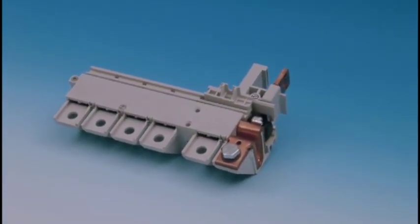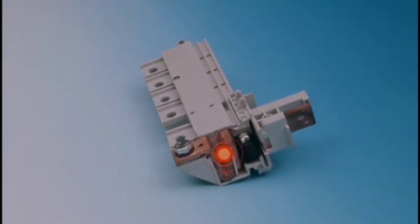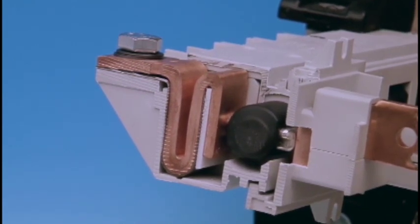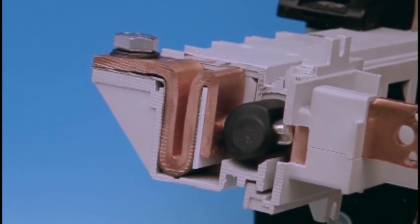There is no reciprocal movement of the parallel pressure contacts during a short circuit, because of their complete phase-to-phase encapsulation. Compared to finger contacts, there is no breaking of the magnetic field between the pressure contacts.